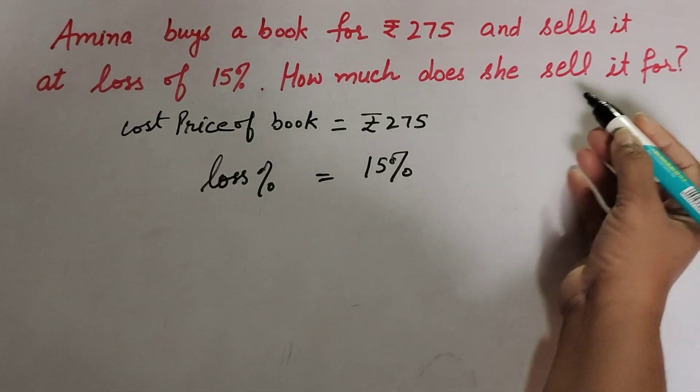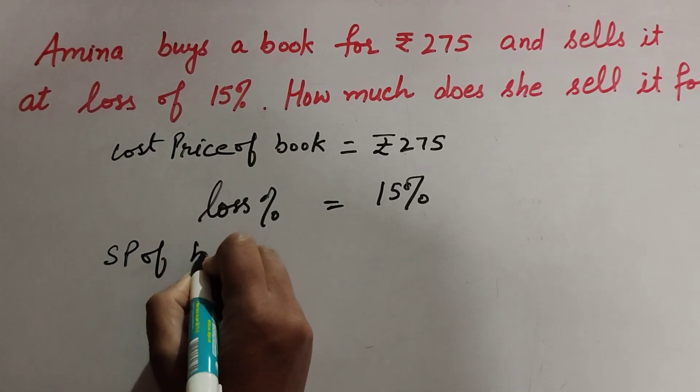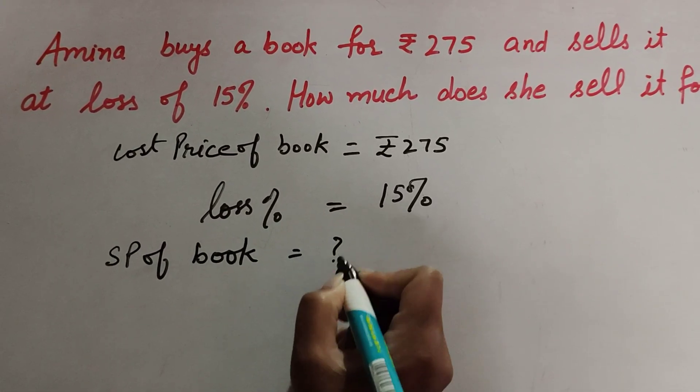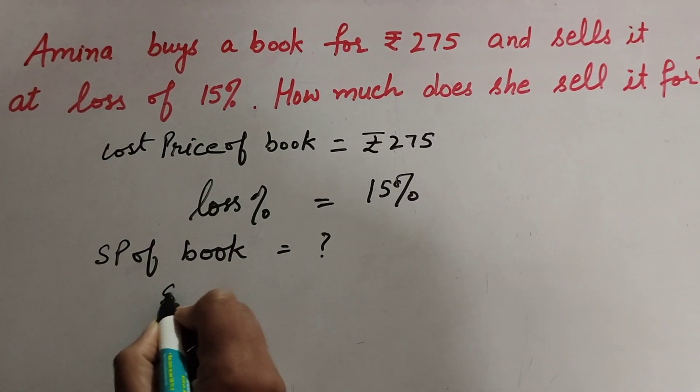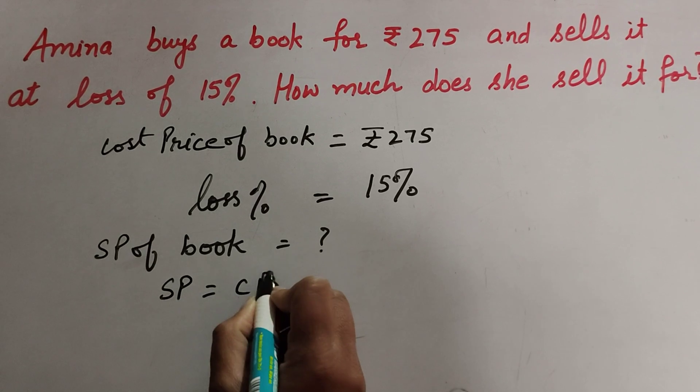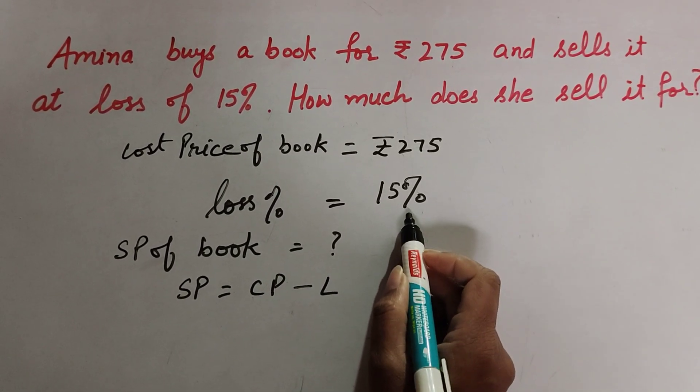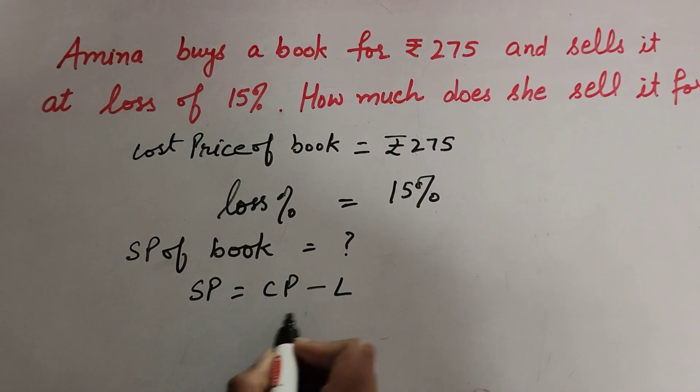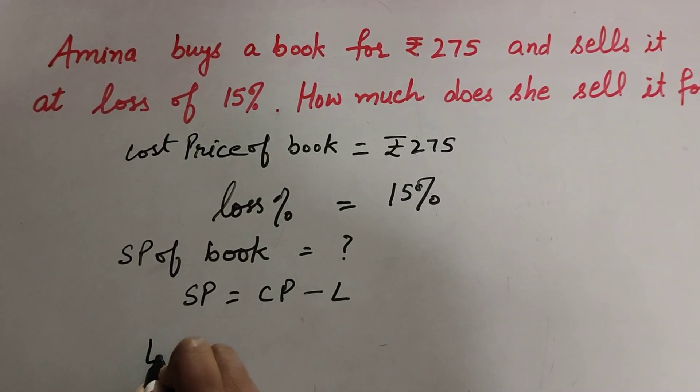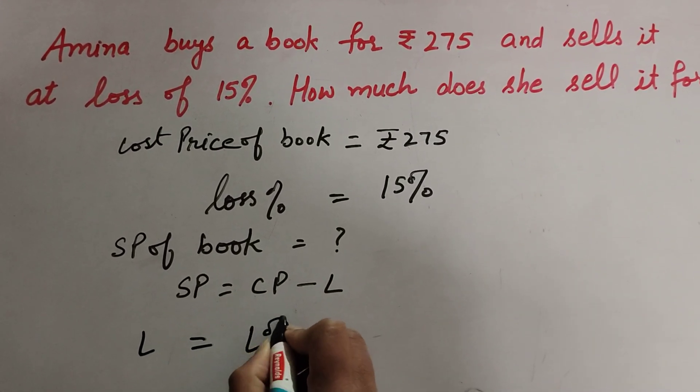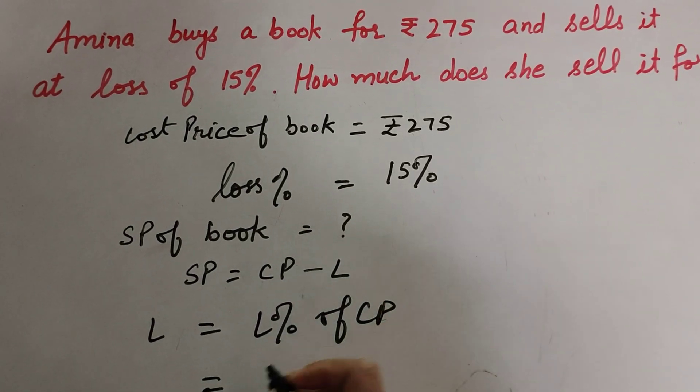We need to find the selling price of the book. We know the formula to find selling price: SP equals cost price minus loss. The given thing is loss percentage, so we find loss first. Loss is equal to loss percentage of cost price.